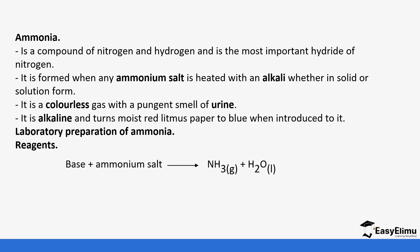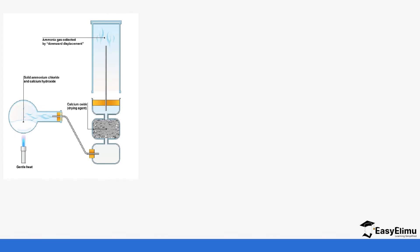When it comes to the laboratory preparation of ammonia, we have said it is prepared when an ammonium salt is heated with an alkali. So we take a base — the alkali — plus the ammonium salt. Different ammonium salts can be used, and ammonia and water are formed in the process.